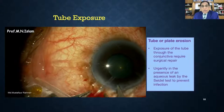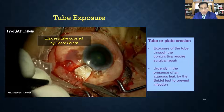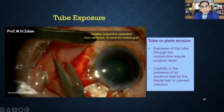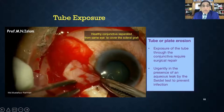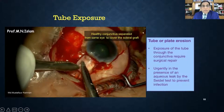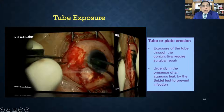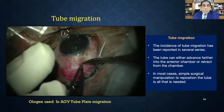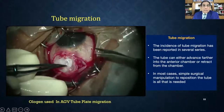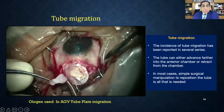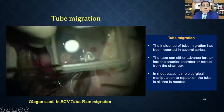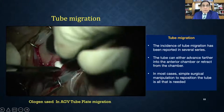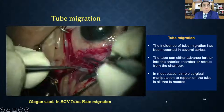Tube exposure is not uncommon over a patient's lifetime with GDD. In one case with scleral thinning but no overlying conjunctiva, donor conjunctiva was harvested from the other eye to cover the area, then covered with amniotic membrane. In another case — a child with Sturge-Weber syndrome after 7–8 years — tube migration anteriorly caused elevated IOP. I dissected the fibrous capsule, placed ologen over the plate, re-sutured everything, and the patient is doing very well years later.